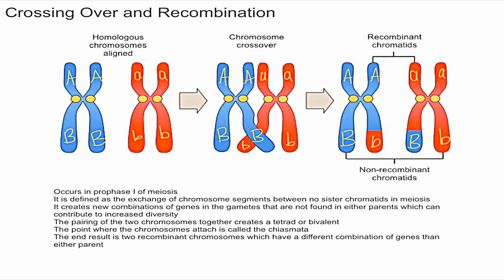Now let's look at how this happens. I've written some genes on there — capital A and capital B on one chromosome, and lowercase a and lowercase b on the other, so the alleles are labeled. During prophase one, these two chromosomes — the big X-shaped structures — come together. The blue and the red are homologous chromosomes, and they come together during prophase one of meiosis and attach.